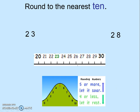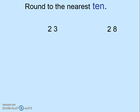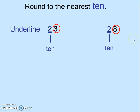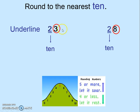Now let's try some more examples. Round to the nearest 10. First, we underline the digit in the tens place. We circle the digit to the right. Then, using the rules of rounding, if the digit is less than 4, the number in the tens place stays the same, and this number rounds to 20. If the number in the ones place is 5 or more than 5, we let it soar, which means we plus 1 to the number in the tens place, and this becomes 30.